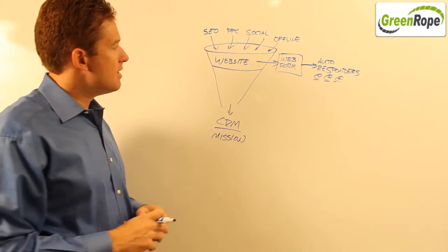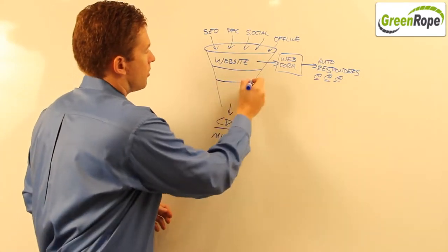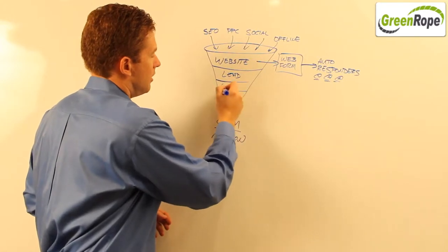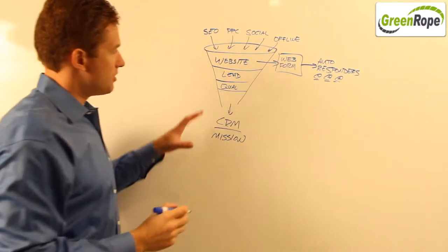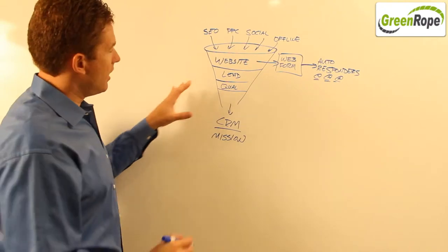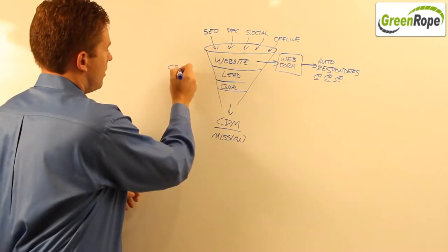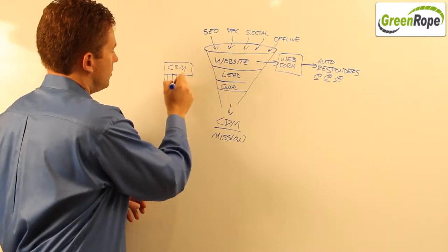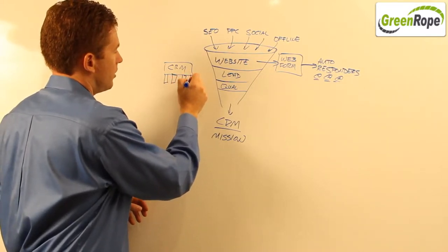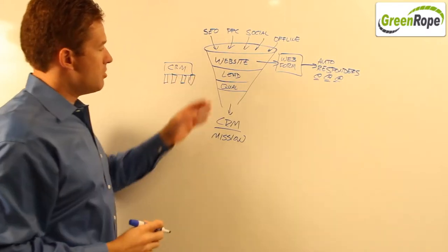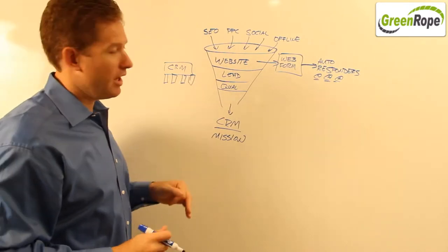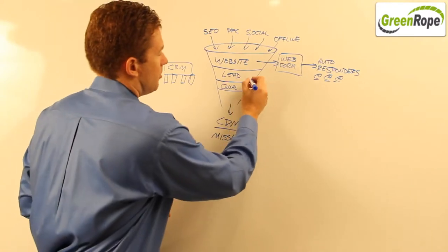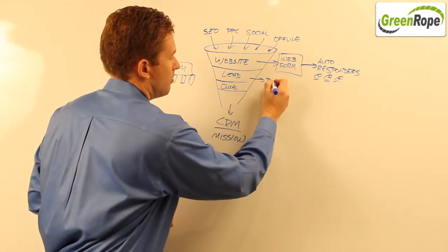The next step is to go through the lead and lead qualification process. So within our system, within GreenRope, you have a CRM. And inside that CRM, you have the ability to set up different groups. So within these groups, you can put people as different leads or qualifications. And as a result of them being in these different groups, you can set up what are called drip campaigns.